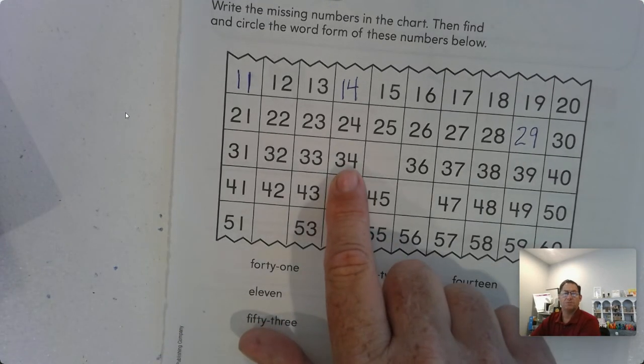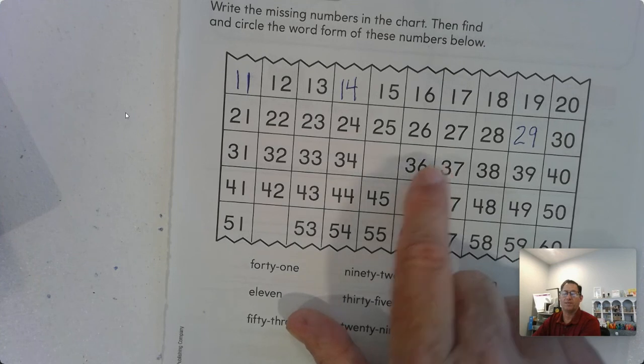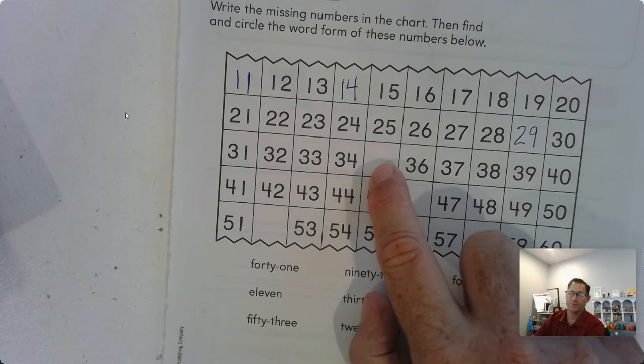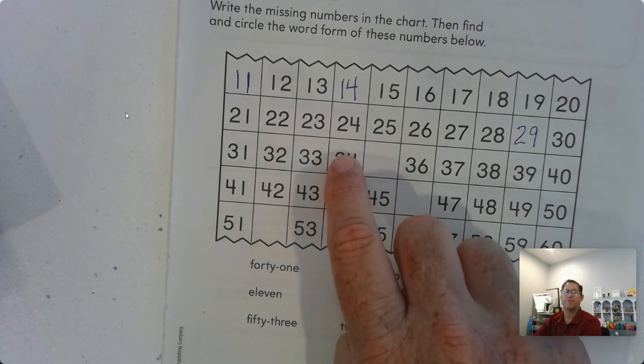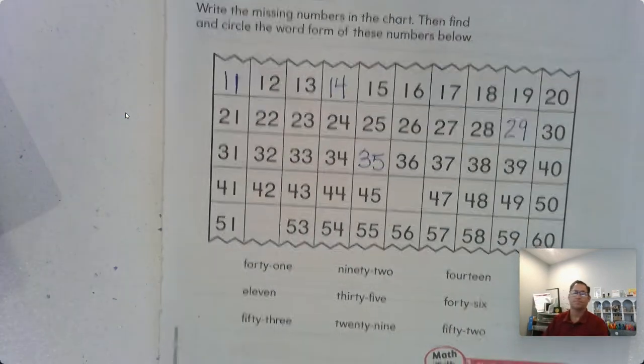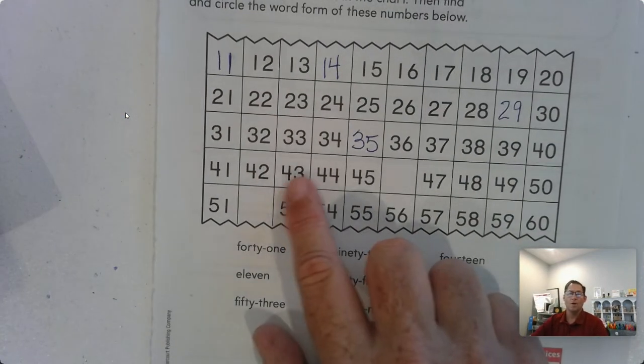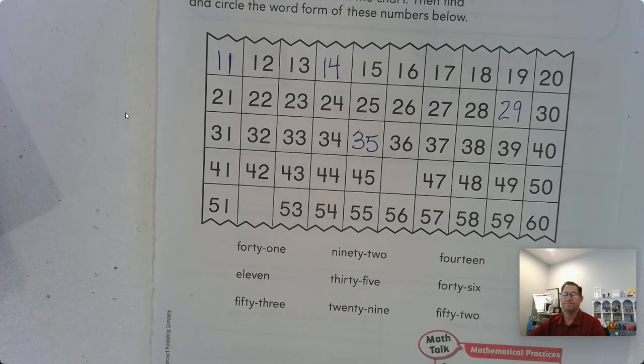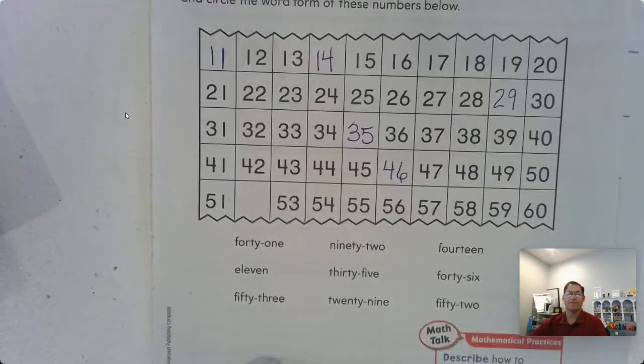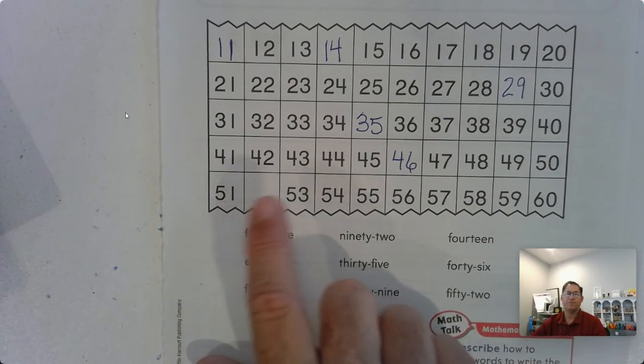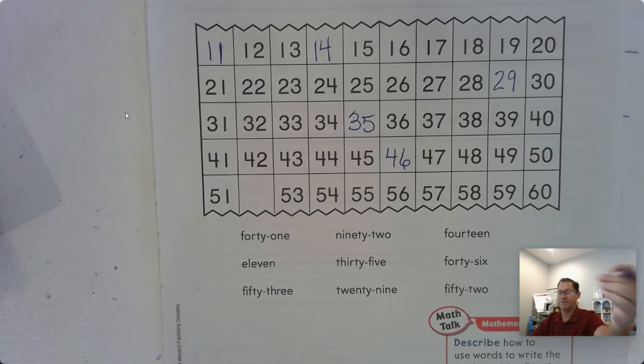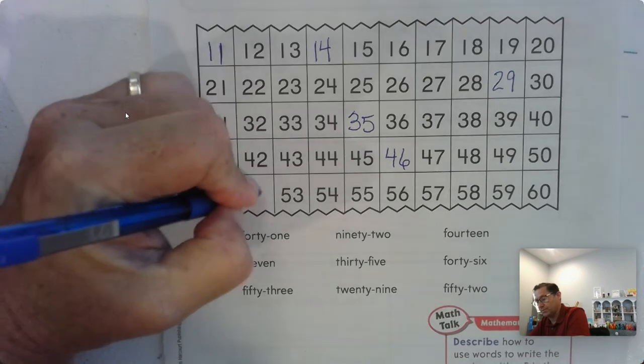What number comes after 34 but before 36? We could go backwards: 38, 37, 36, 35. We could also count forward: 32, 33, 34, 35. What number is in between 45 and 47? Yeah, 46. And what number comes between 51 and 53? 50, 51, 52.